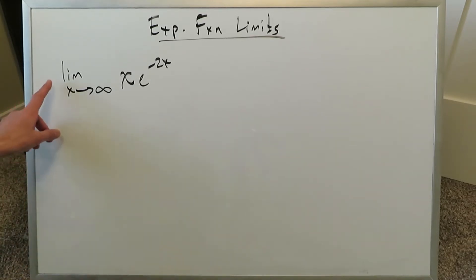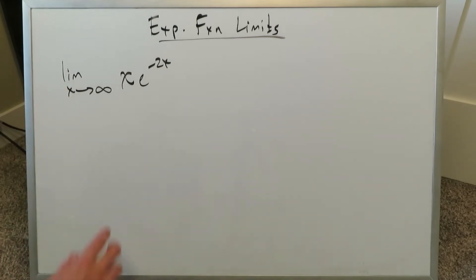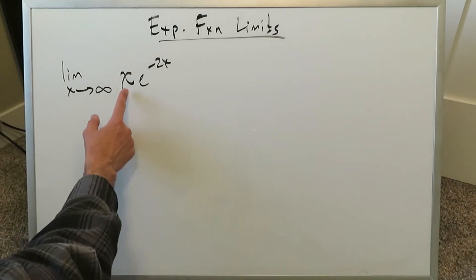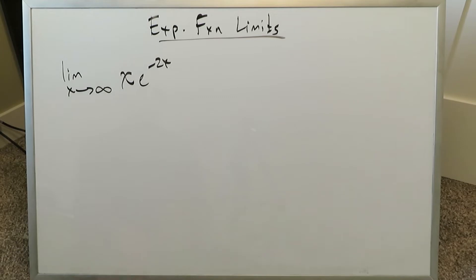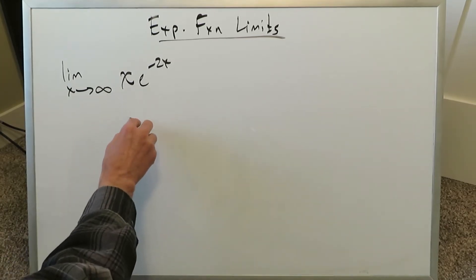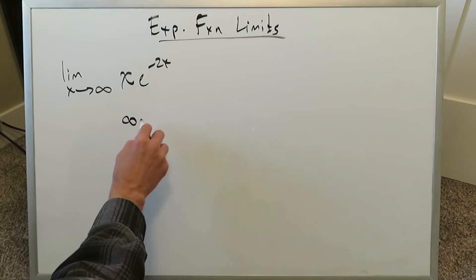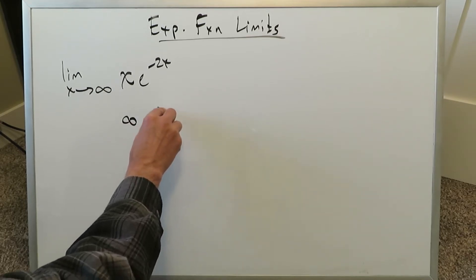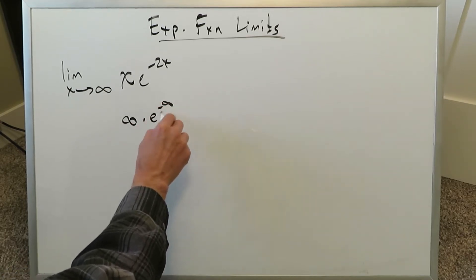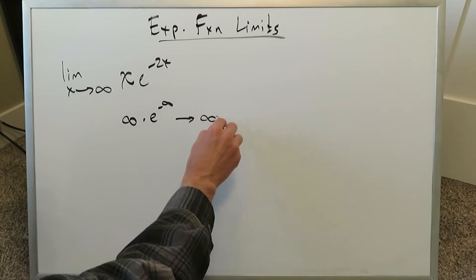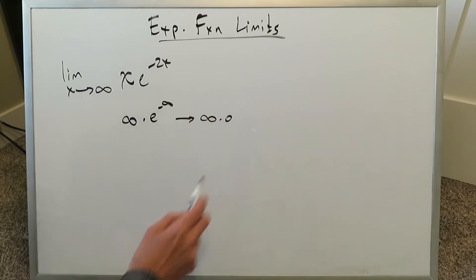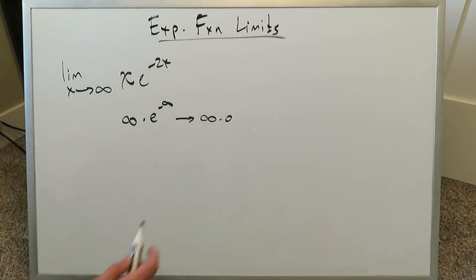Our first question is this limit as x approaches infinity. We have this product of two separate functions: x and e to the power of minus 2x. If you were to arbitrarily put infinity in place of x, you would end up seeing infinity times e to the minus infinity, which equals infinity times 0 — an indeterminate product form.